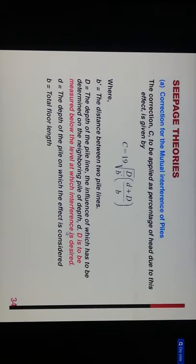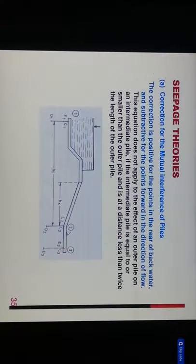Small d is the depth of pile on which the effect is considered, and capital B is the total floor length. Correction of mutual interference of piles: the correction is positive for points in the rear of backwater and subtracted for points forward in the direction of flow. This equation does not apply to the effect of outer pile on intermediate pile if the intermediate pile is equal to or smaller than the outer pile and is at a distance less than twice the length of the outer pile.